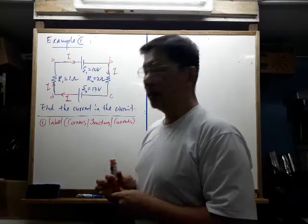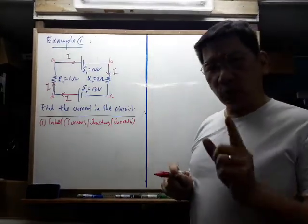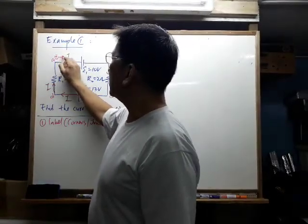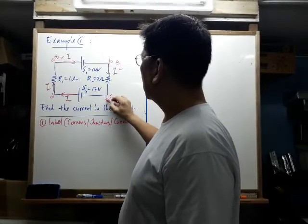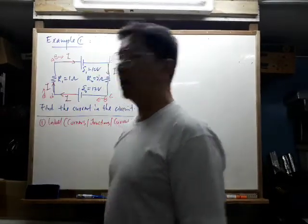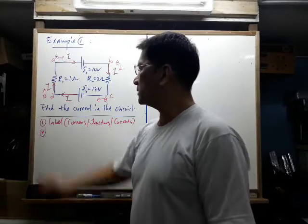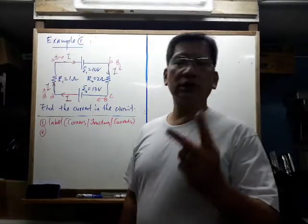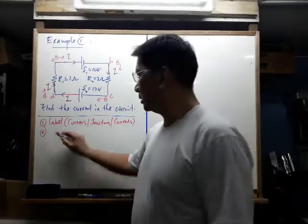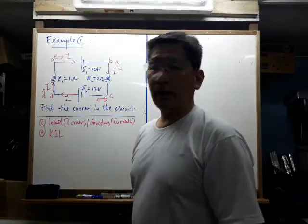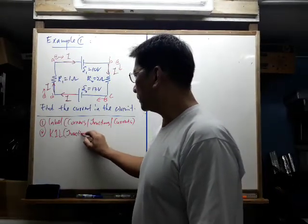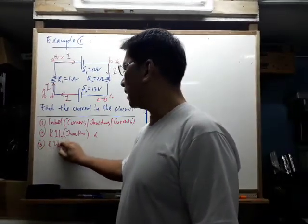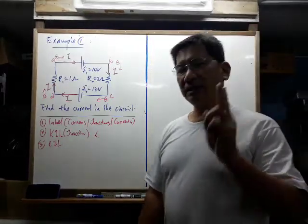Remember, when we analyze Kirchhoff's sub-rules, we assume that you are a positive charge moving in the direction of the current. Now, step two is to find the current. There are two rules you have to use: Kirchhoff's first law and second law. Kirchhoff's first law requires a junction, and since there's no junction here, we don't have to use it. So we go to Kirchhoff's second law.